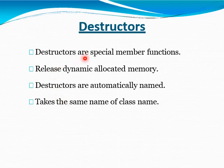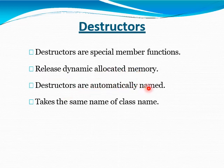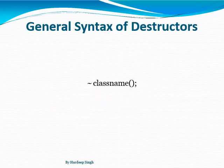Next is the Destructor. A Destructor is a special member function used to release dynamic memory allocation. A Destructor is automatically called when an object is destroyed. It takes the same name as the class name. The syntax of a Destructor is the tilde symbol (~) followed by the class name.